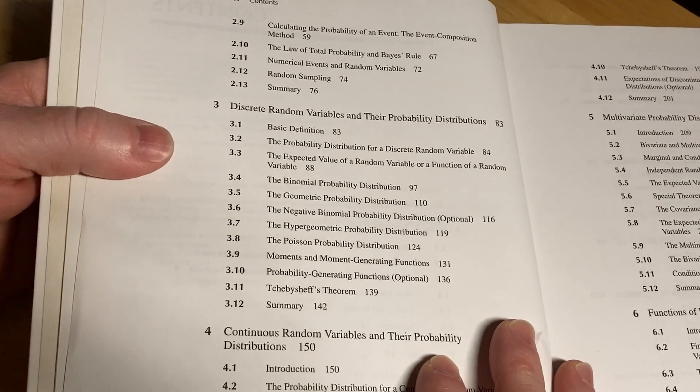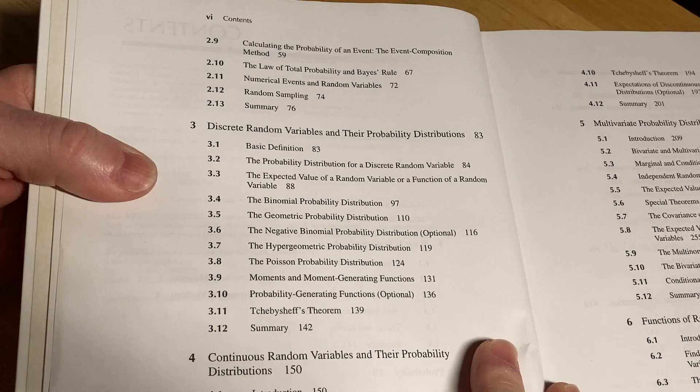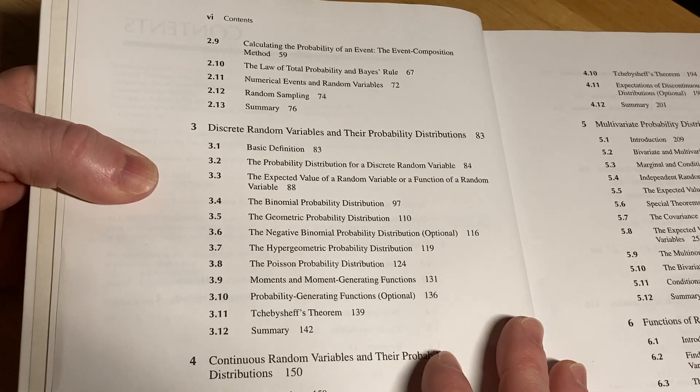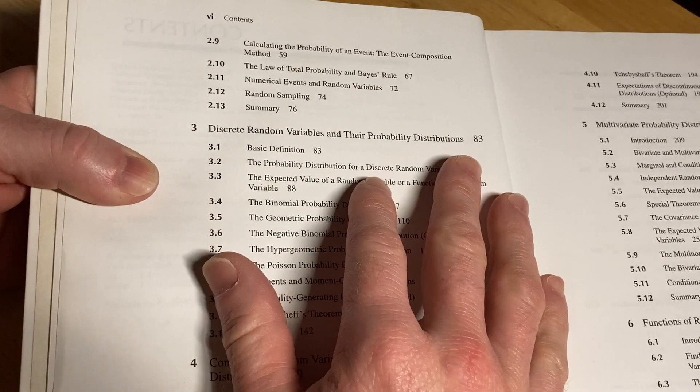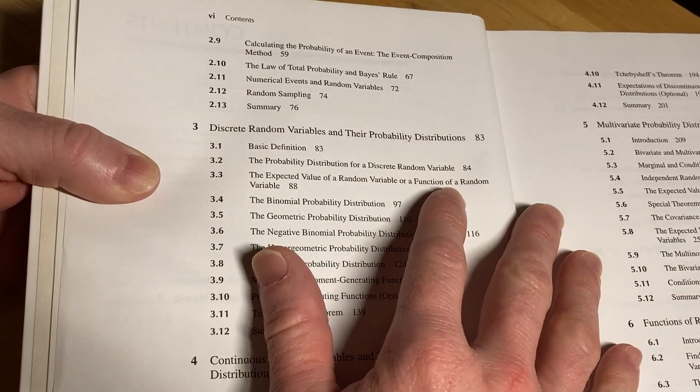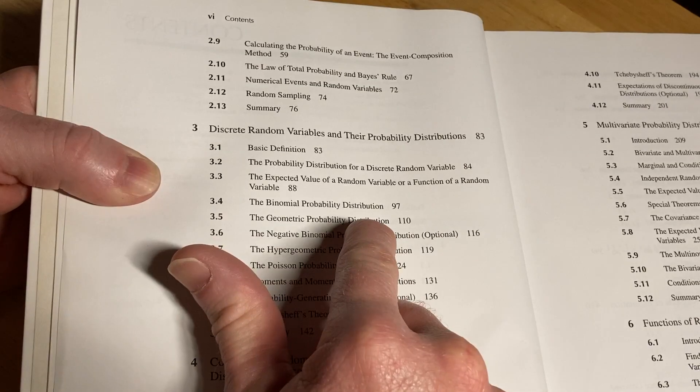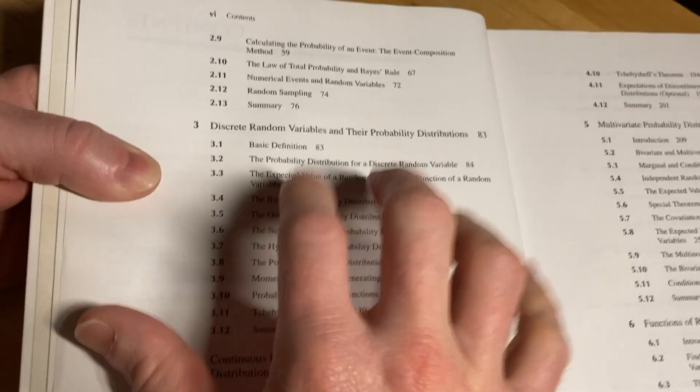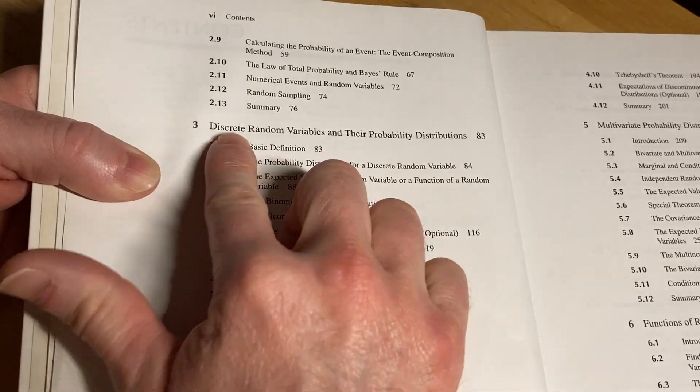Courses that use this book would be called mathematical statistics or statistical theory. And typically, statistics majors take them, and math majors take them. I had a friend in college. He was my best friend in college. He was a really good guy. He was from Sweden. And he had a 4.0, I think. I'm pretty sure he did.